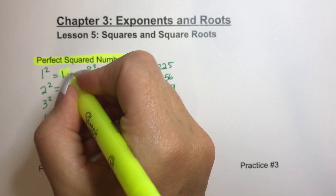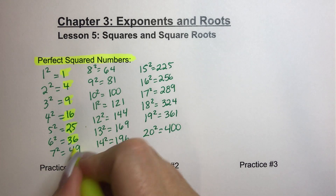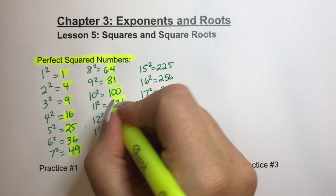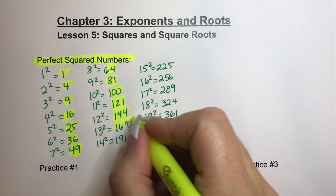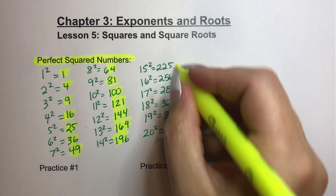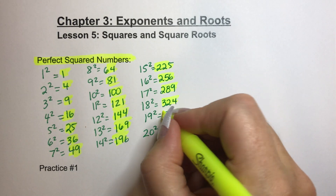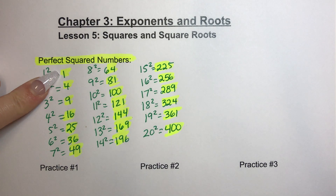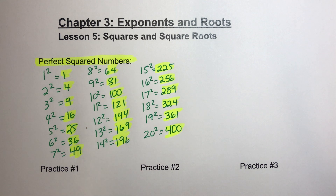1, 4, 9, 16, 25, 36, 49, 64, 81, 100, 121, 144, 169, 196, 225, 256, 289, 324, 361, 400. It's really, really important that you memorize these numbers because it's going to make everything easier.